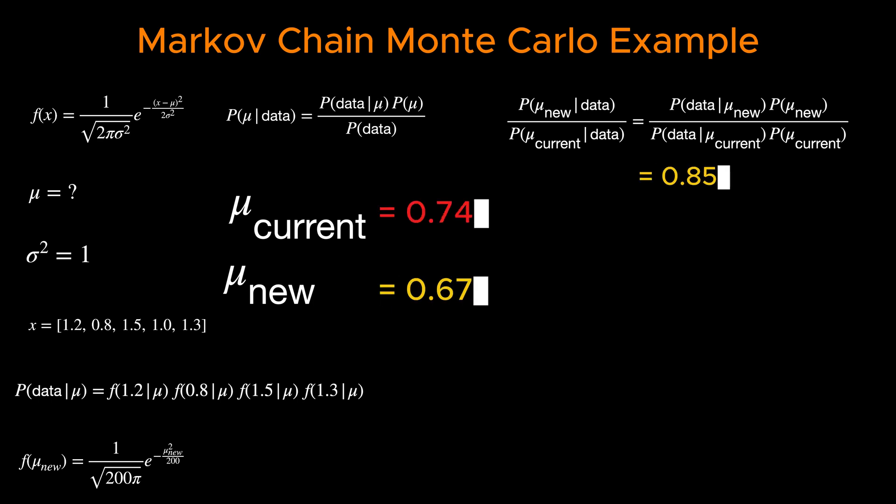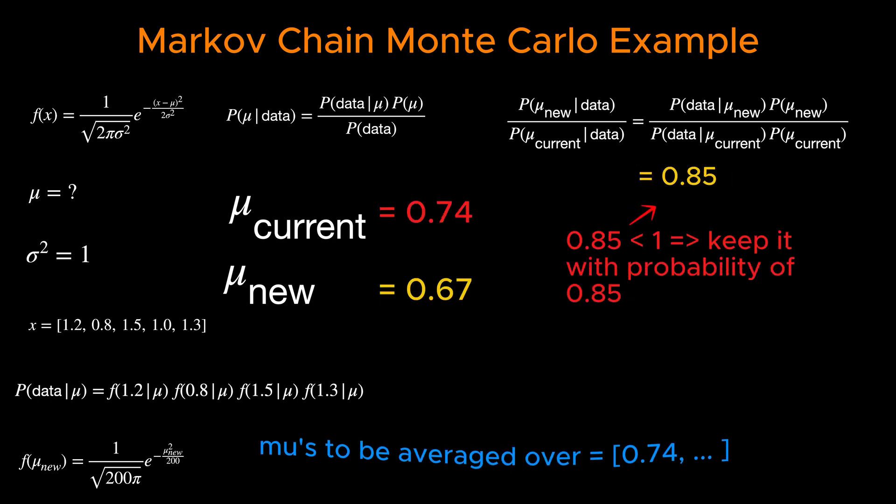However, if the probability of new μ is less than the probability of current μ and only to give low probability regions of the parameter space a chance, we accept it with a probability equal to the acceptance ratio.